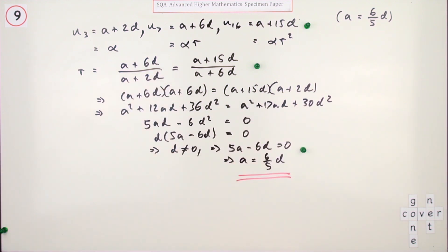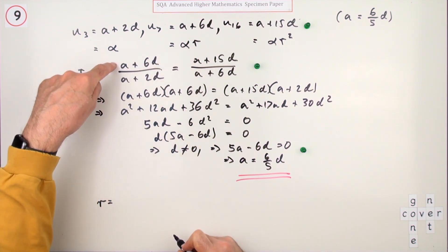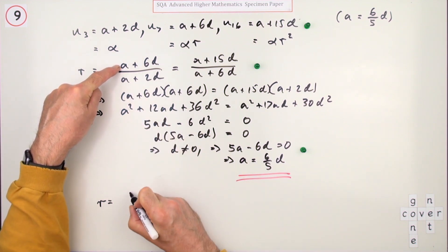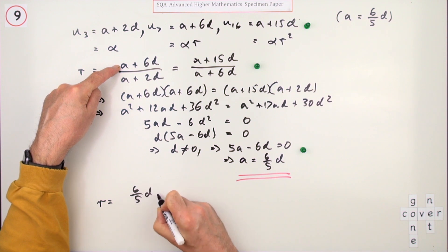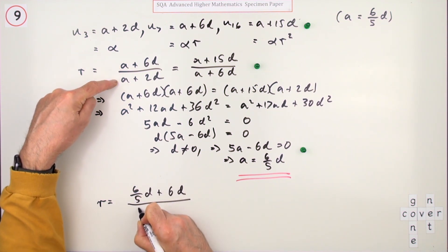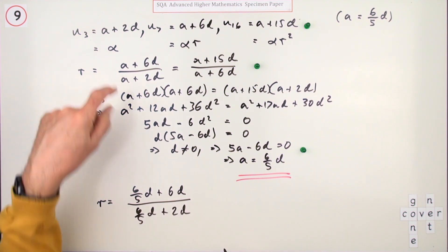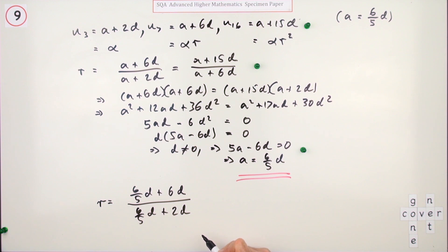Going through all of that was just one mark, and for the final mark I have to find what r is. So I'll take this one. R equals 6 upon 5d plus 6d over 6 upon 5d plus 2d. Divide everything by d and the d's have gone. Multiply everything by 5 and the 5s go in the denominators. So I've got 6 plus 30 over 6 plus 10, which is 36 over 16. Both divide by 4, giving 9 upon 4. That's the last mark.